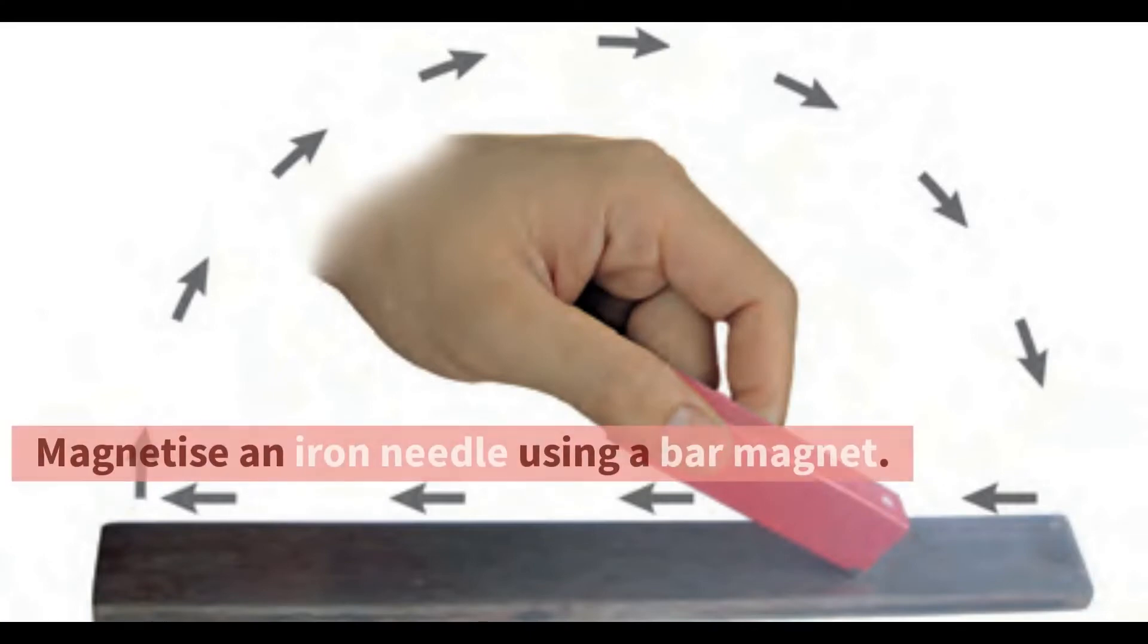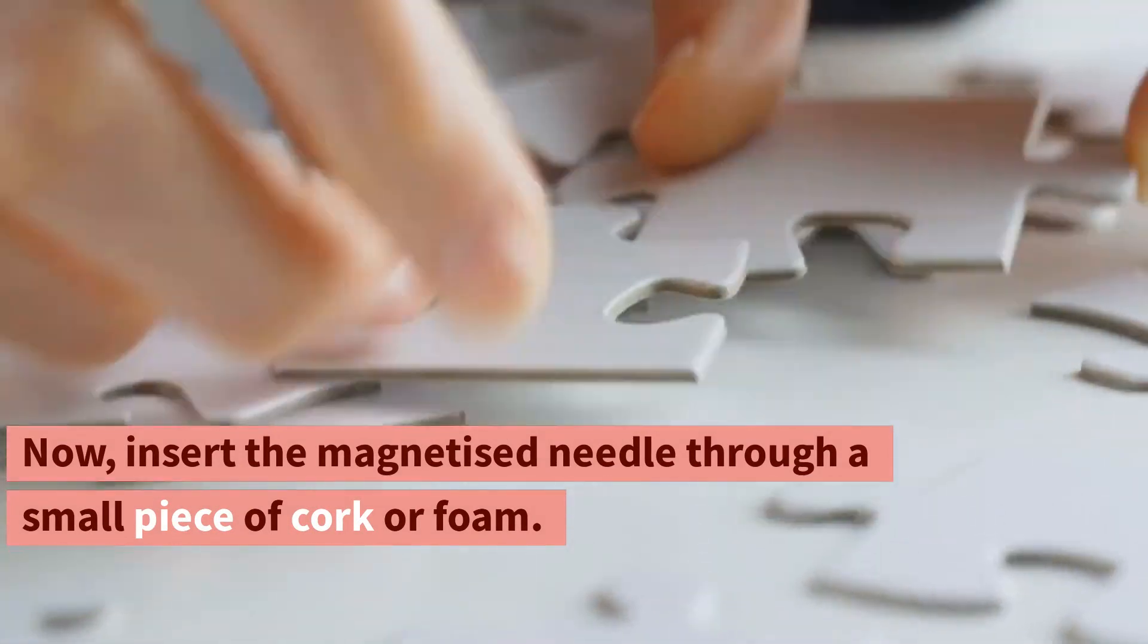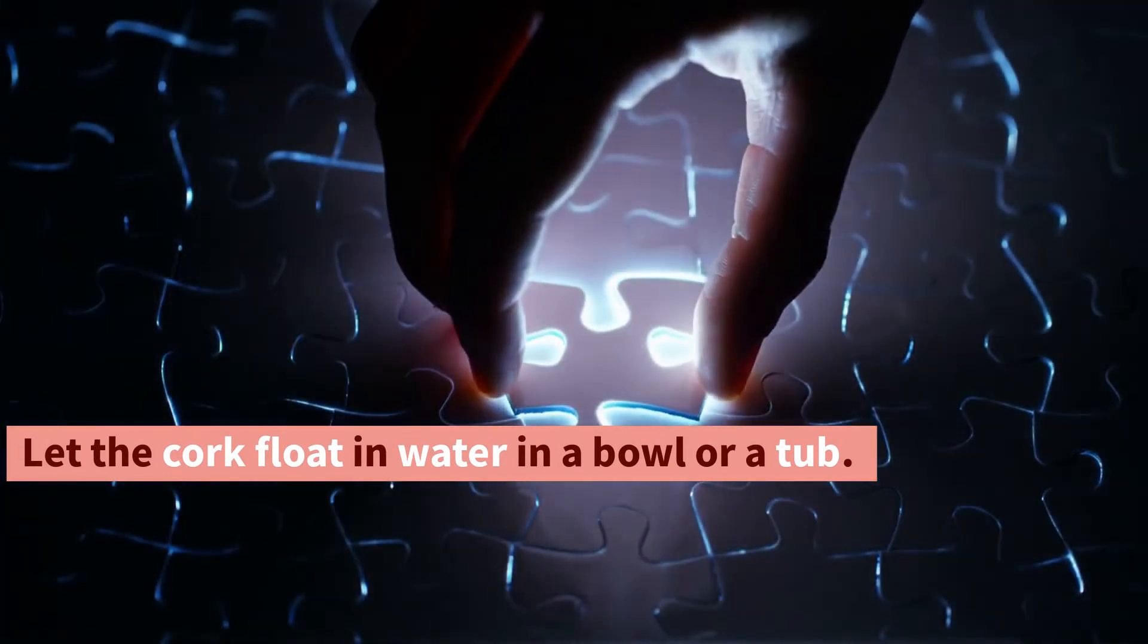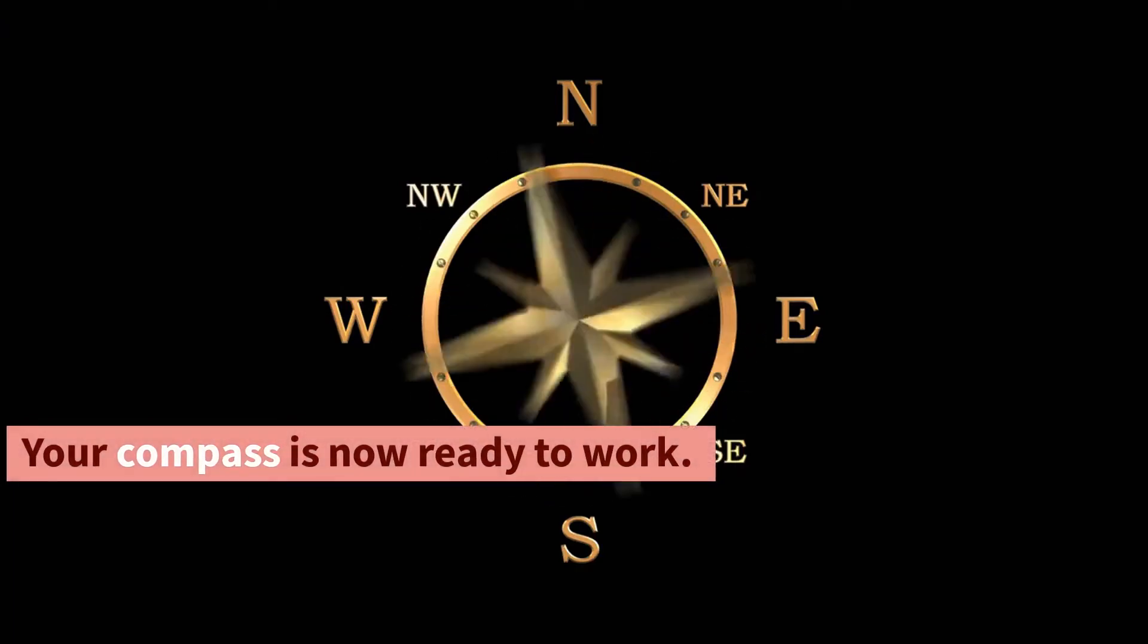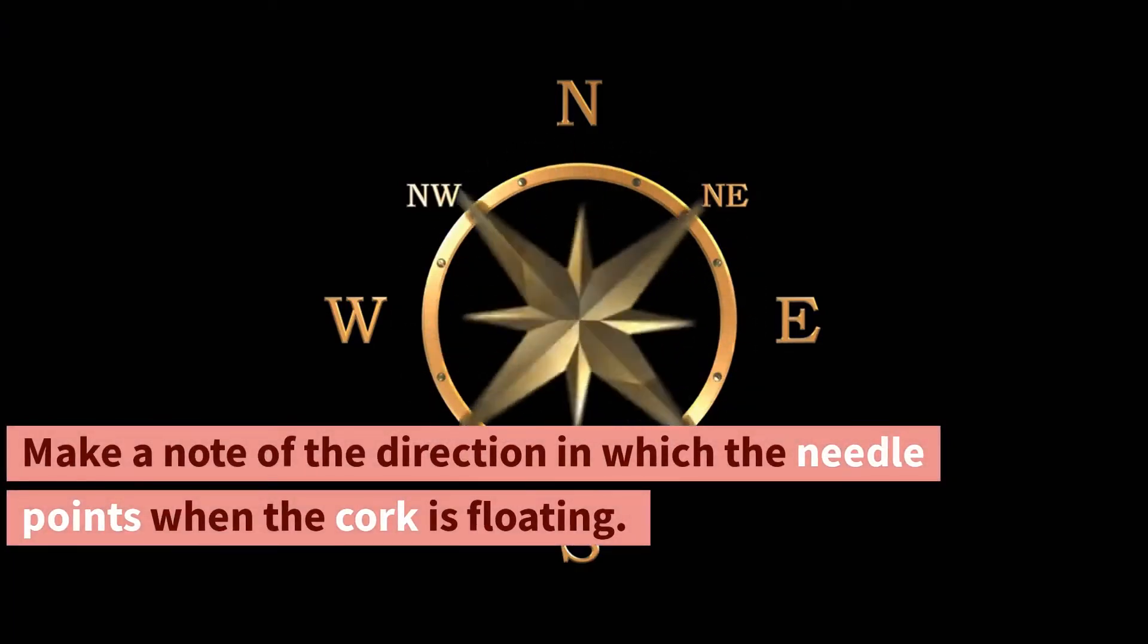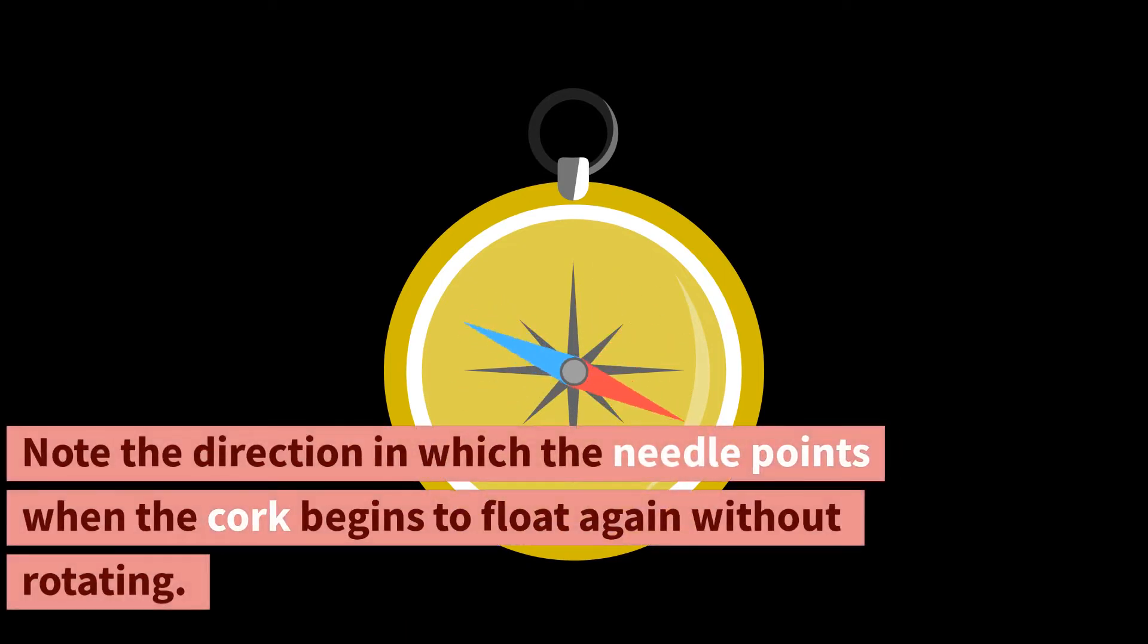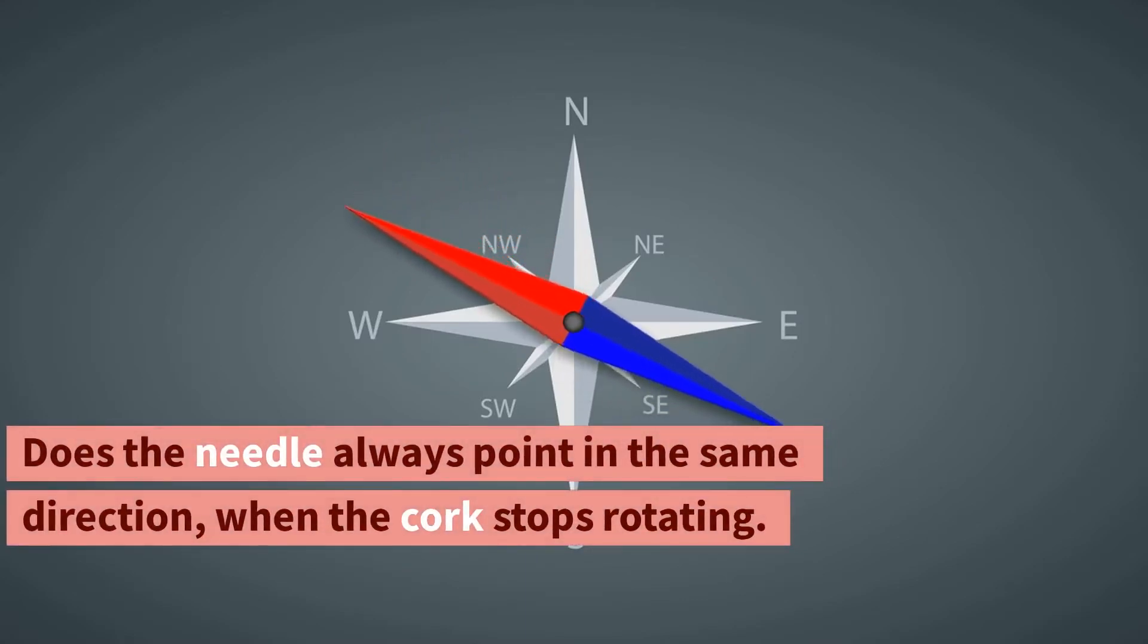Would you like to make your own compass? Activity 6. Magnetize an iron needle using a bar magnet. Now insert the magnetized needle through a small piece of cork or foam. Let the cork float in water in a bowl or a tub. Make sure that the needle does not touch the water. Your compass is now ready to work. Make a note of the direction in which the needle points when the cork is floating. Rotate the cork with the needle fixed in it in different directions. Note the direction in which the needle points when the cork begins to float again without rotating. Does the needle always point in the same direction when the cork stops rotating?